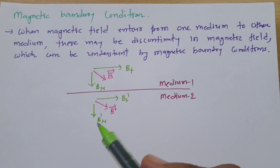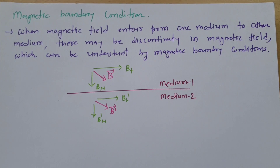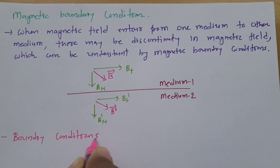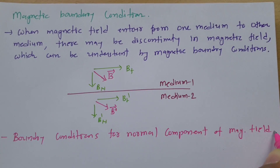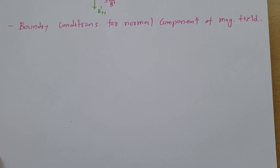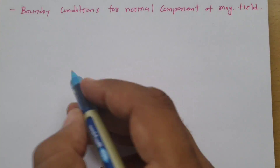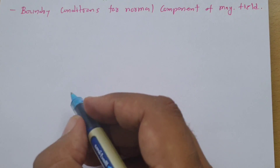So in magnetic boundary conditions, we are dealing with how much discontinuity exists in the tangential component and how much in the normal component. I will first explain boundary conditions for the normal component.